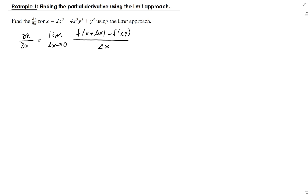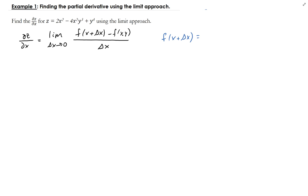Let's first figure out f(x + Δx). So plugging all that in — z represents f(x, y) — we're going to evaluate this function at x plus Δx. So f(x + Δx, y) is going to be two times (x + Δx)², minus four times (x + Δx)², times y³, plus y to the fourth.